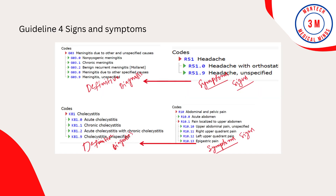Guideline 4: Signs and Symptoms. Codes that describe symptoms and signs, as opposed to diagnoses, are acceptable for reporting purposes when a related definitive diagnosis has not been established or confirmed by the provider. Chapter 18 of ICD-10-CM — Symptoms, Signs, and Abnormal Clinical and Laboratory Findings, Not Elsewhere Classified (codes R00.0–R99) — contains many, but not all, codes for symptoms.